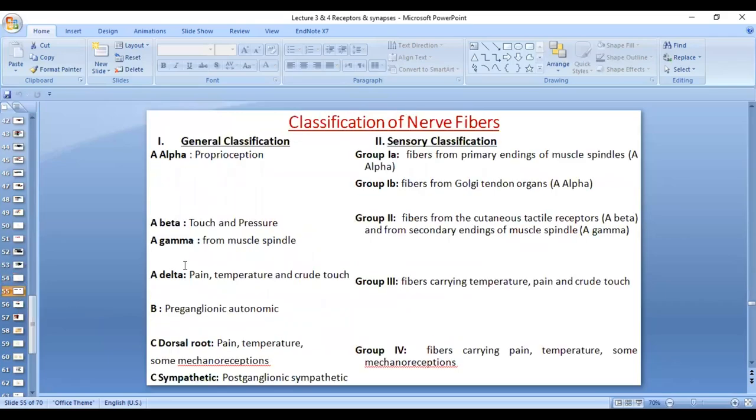When we talk about classification of nerve fibers, it comes a lot with physiology. There is general classification which you are familiar with from physiology. You need to remember that there is A-alpha, A-beta, A-gamma, A-delta and C fibers. You don't need to go into the details of B fibers, C fibers. Okay?